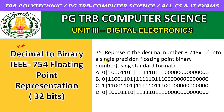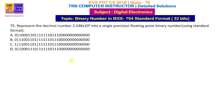Single precision means 32 bits. We can represent a decimal number as a single precision floating point binary number. This is called IEEE 754 format — the standard format. This is the first step.